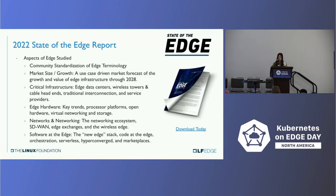The State of the Edge report for 2020 can be downloaded directly. It covers community standardizations, APIs, market size, control plane, orchestration, and security — covering most questions about what, how, and when about edge computing.